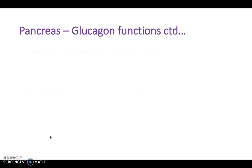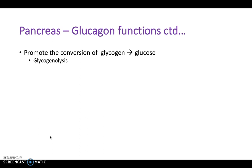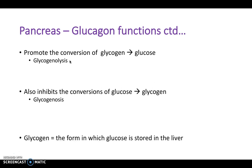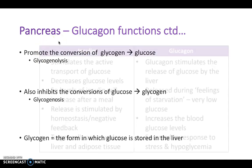On the other hand, glucagon is released from the alpha cells and does the opposite. It promotes the conversion of glycogen to glucose — promoting the breakdown of glycogen and therefore inhibiting glycogenesis, the storing of glucose as glycogen. Understanding glycogenesis and glycogenolysis is really important in understanding what glucagon and insulin do.